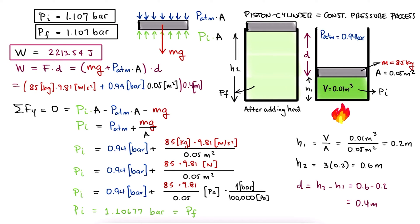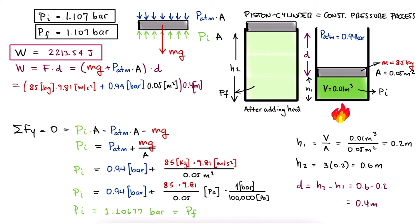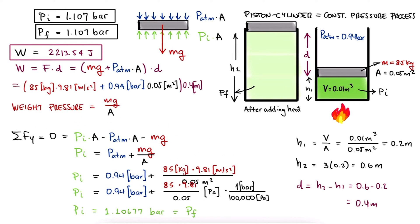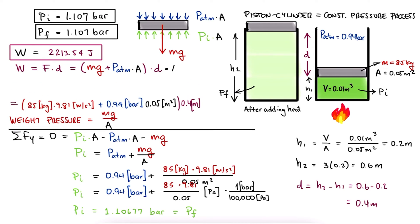Additionally, and this will become very important for this thermo course real soon, since the pressure the piston is generating is its weight over its area, we can take this work expression and multiply it by the area on the numerator and the denominator to write the work as mg over A plus P atmospheric, which is the piston's pressure plus atmospheric pressure, or just the absolute pressure, times D times A, which is the same as a volume.